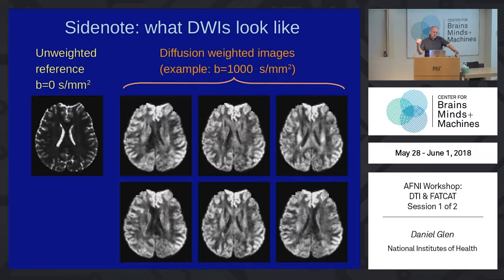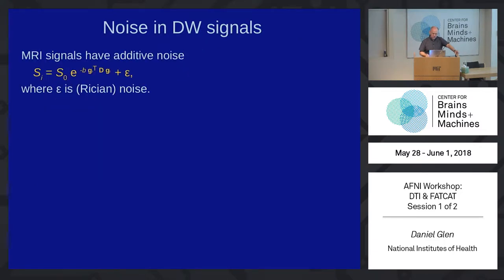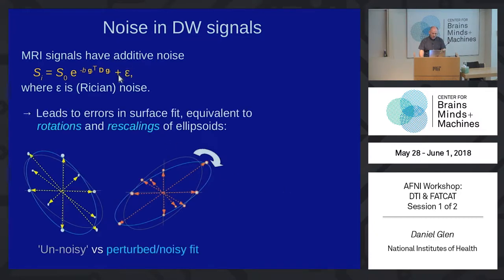In each gradient, it changes the image in specific ways. By using those different values, we can solve this equation — generally with an additive noise model so we can solve it linearly, or we can solve it non-linearly taking into account noise. If you don't account for the noise, you'll get differences in rotations and rescaling. All the noise can contribute to mistakes in the values we get out of the ellipsoid.